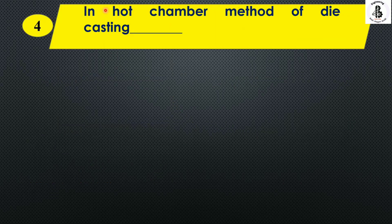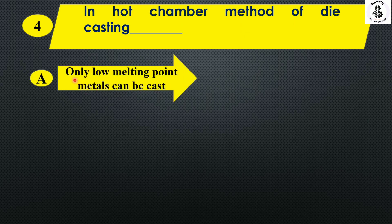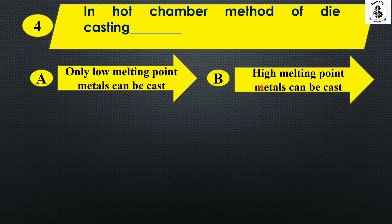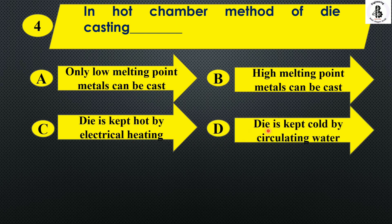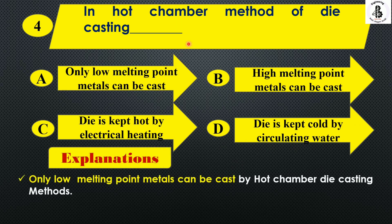Next: in the hot chamber method of die casting — option A, only low melting point metals can be cast; option B, high melting point metals can be cast; option C, the die is kept hot by electrical heating; and option D, the die is kept cold by circulating water. As the name suggests, hot chamber die casting is only feasible for low melting point metals. So the right answer is option A.